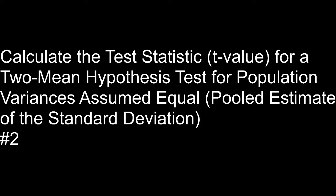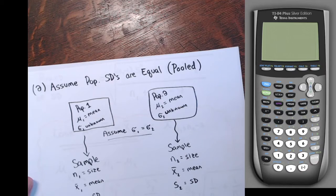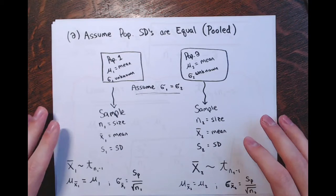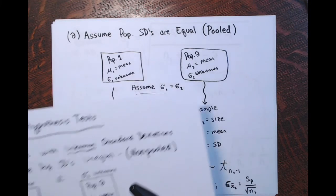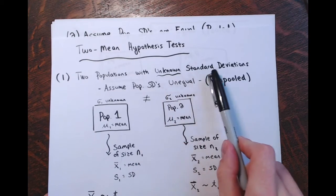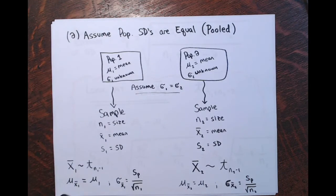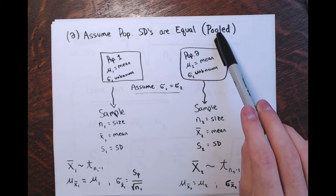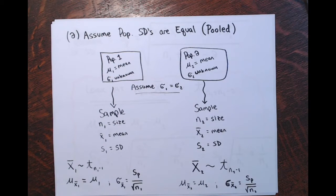In the first video on this objective, I wrote out this information. Let's go to some paper before I get to the question. This is when you have two populations with unknown standard deviations, but when those population standard deviations are assumed to be equal. This is called the pooled scenario, as opposed to the non-pooled or unpooled scenario you might have seen in other videos.